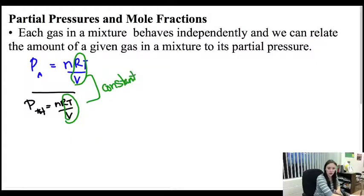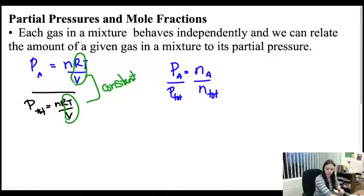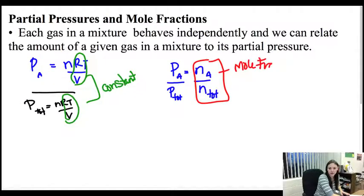These NRT over Vs are constant. They're the exact same thing for both. The only thing you're changing is the N. What you end up with is that the pressure of A compared to the pressure total is equal to the amount of A and the amount total. Well, this N over N should look kind of familiar as a part divided by a whole, which is pretty much a percentage, to figure out how many moles compared to my total moles. Well, we call that a mole fraction. So this little thing right here is called a mole fraction because it's like a percentage of moles without the times 100.